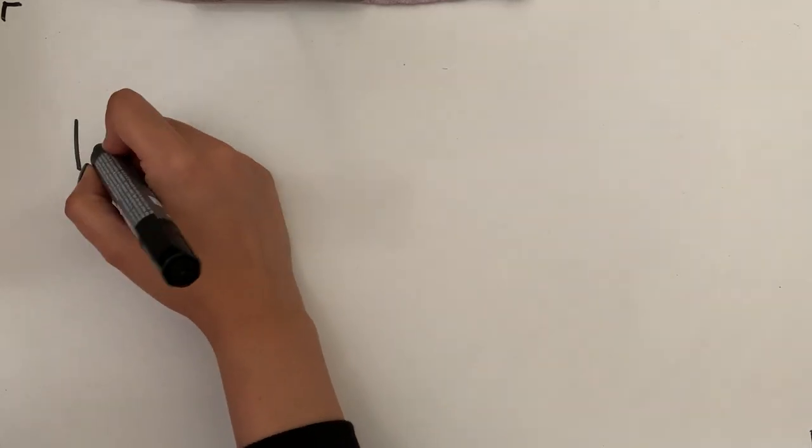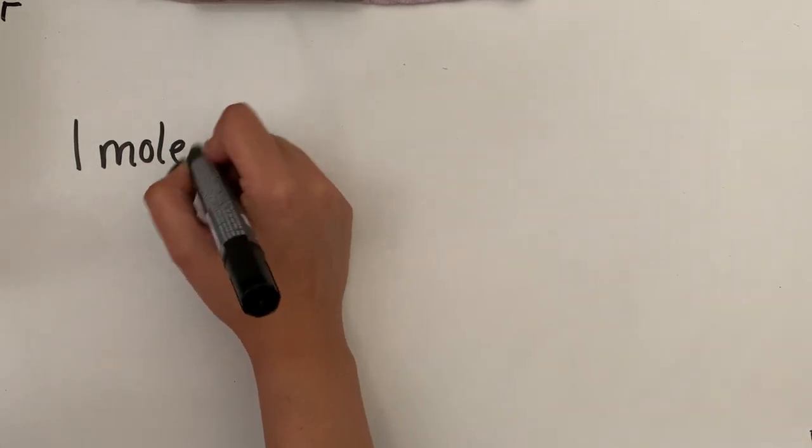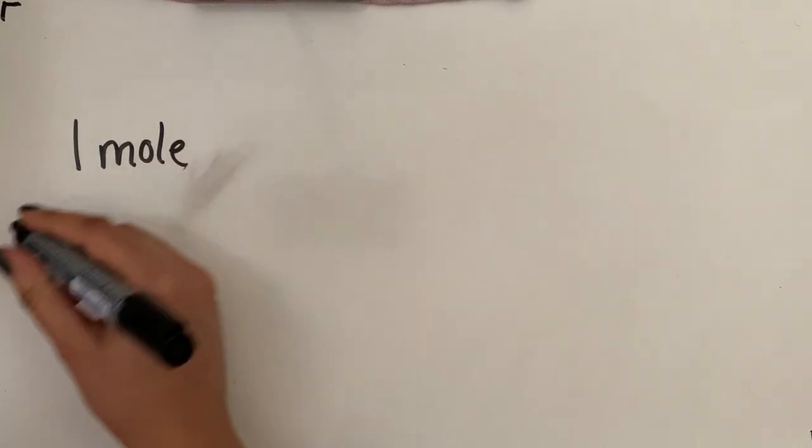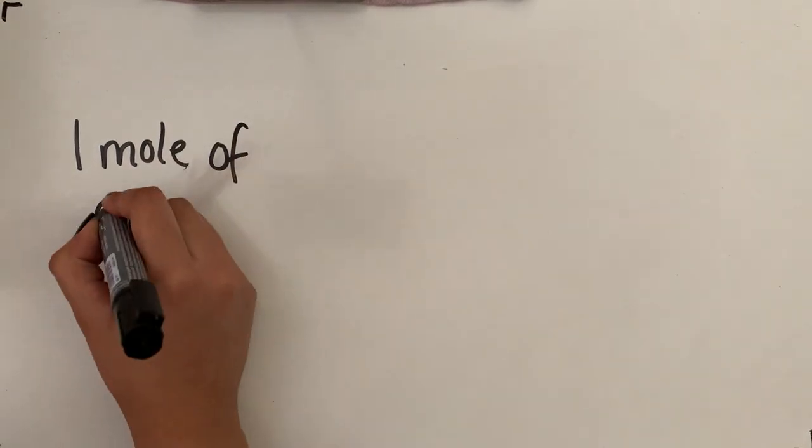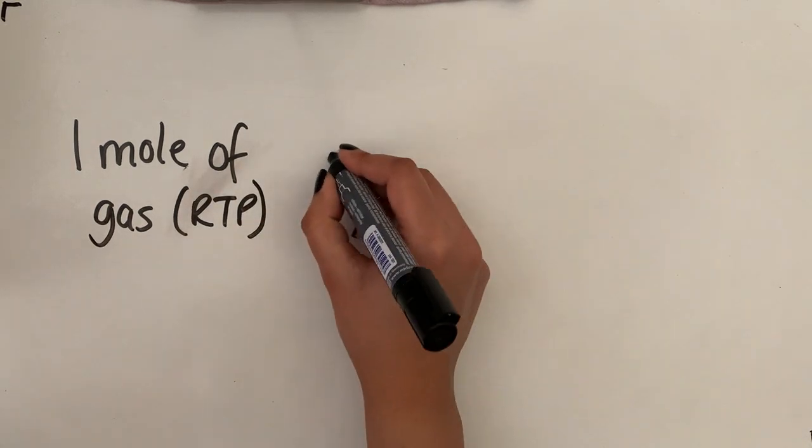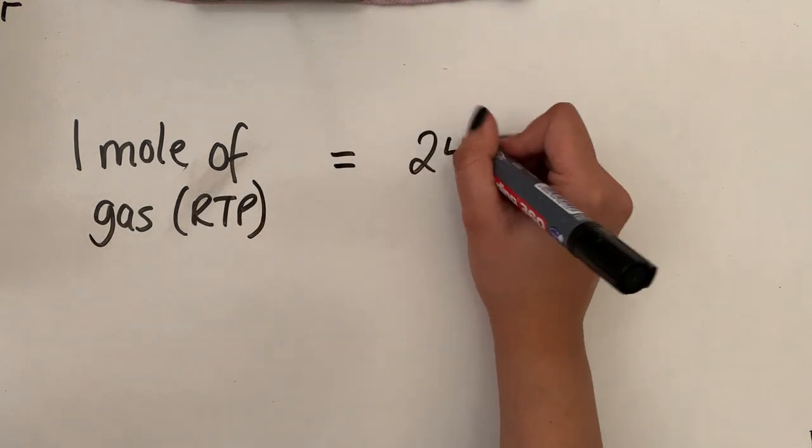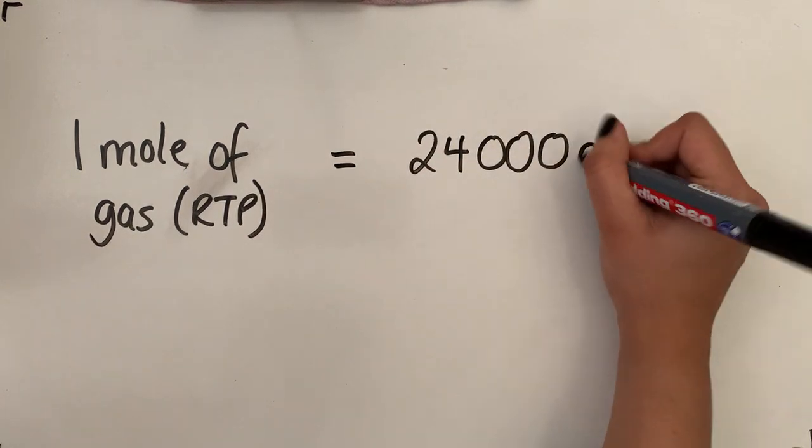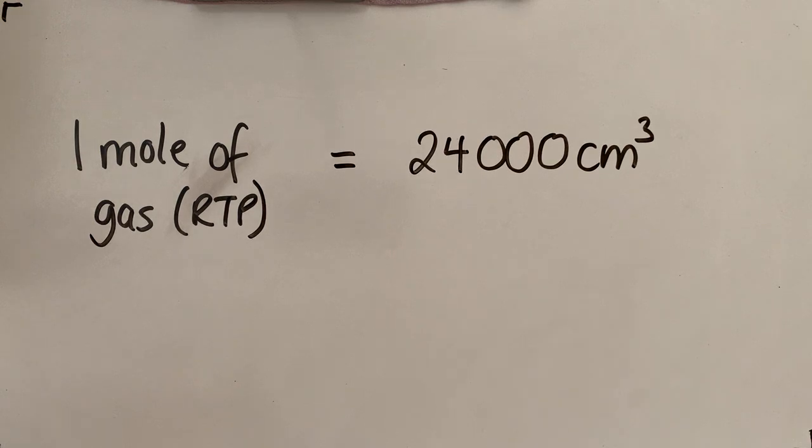So it says at room temperature and pressure, the volumes of all gases. So one mole of all gas. So one mole, one mole of gas at room temperature and pressure is always going to cover the volume 24,000 centimeters cubed. So one mole of any gas and that can be oxygen, carbon dioxide, anything. One mole of that gas will occupy 24,000 centimeters cubed.